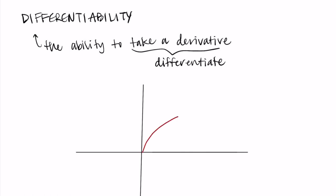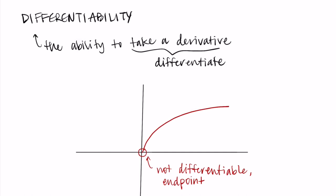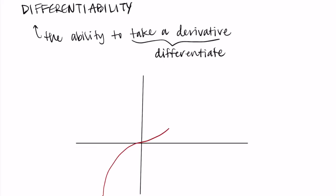Another way that a function cannot be differentiable is at an endpoint. Outside of the domain the function isn't continuous, but at the endpoint the function is also not differentiable. If we try to think of what the tangent line does, we really only know what's happening on one side of the function — we don't know what happens past the end. So we can't take the derivative at an endpoint because we can't really draw a tangent line there accurately.